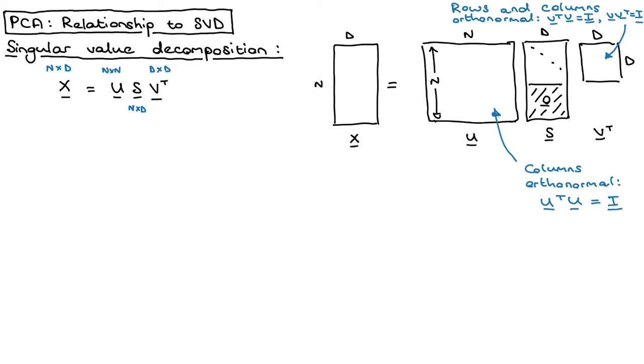So why am I telling you all of this? And what does this have to do with PCA? We're going to take the SVD of the design matrix. Just very quickly, the SVD is for arbitrary matrices. It doesn't need to be a design matrix.